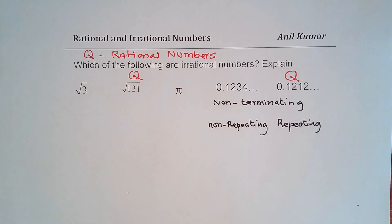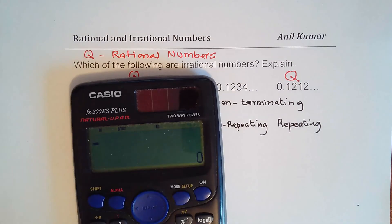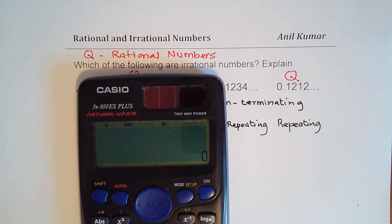Now let us see why square root 3 is not a rational number. So I'm using a calculator here and we'll find the value of square root 3. So what is square root 3 equal to? So it gives us a value 1.732050808.